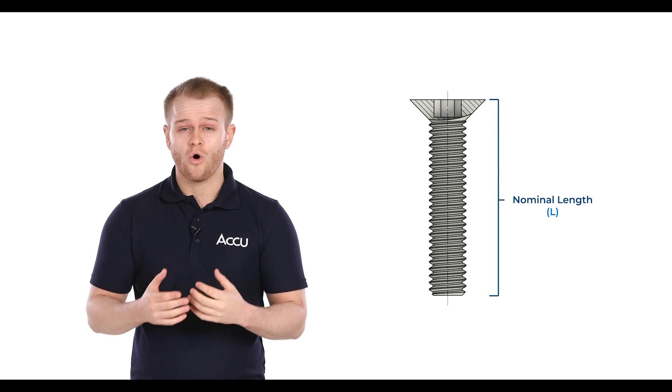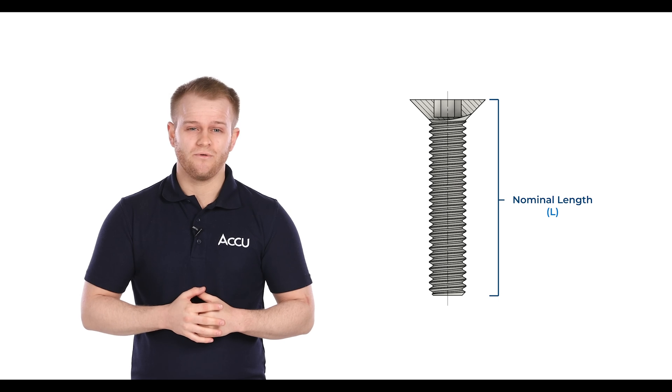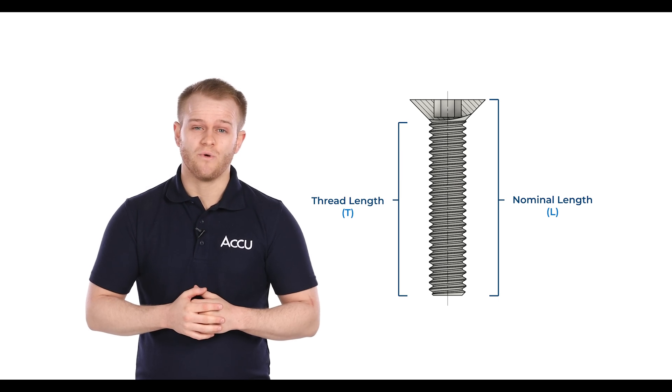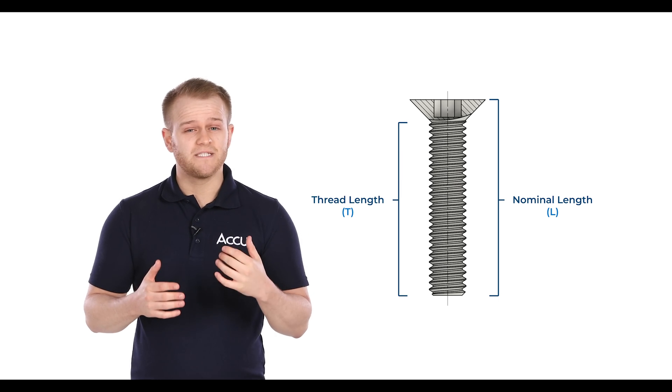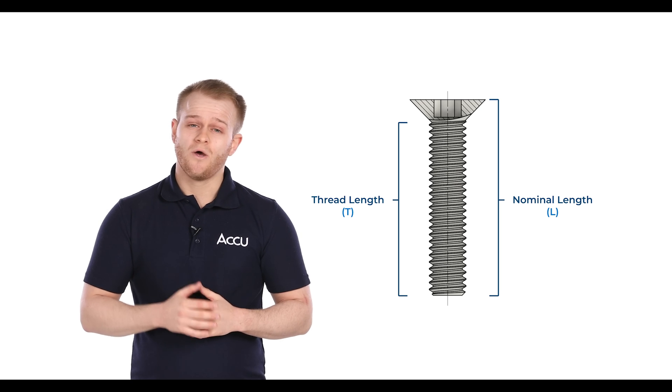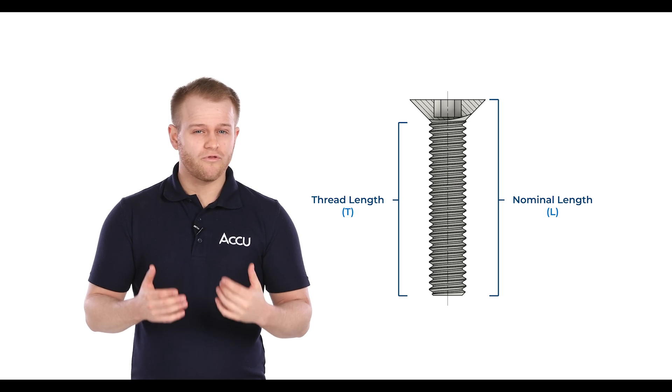The reason for this difference is because the nominal length of a screw typically relates to the depth of the hole the screw is being fastened into as opposed to the length of the threaded portion of the screw itself. This is sometimes given its own separate measurement which as you might expect is called thread length.